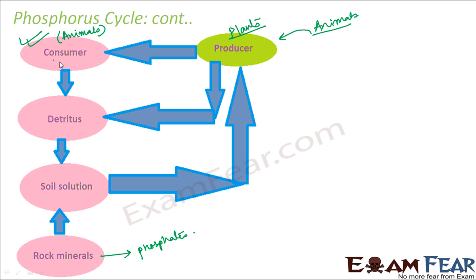Now when these consumers die, or even when the producers die, they become detritus — dead and decaying matter — and they are acted upon by the decomposers. Decomposers such as bacteria and fungi act on this detritus, which contains phosphorus, causing complete breakdown, and that is how phosphorus comes back to the soil. So the story started from the soil and it came back to the soil — that is how the phosphorus cycle takes place.